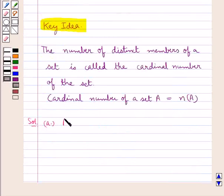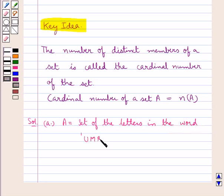First, we have set A, which is the set of letters in the word 'umbrella.' So, A = {U, M, B, R, E, L, A}.